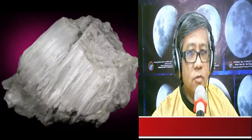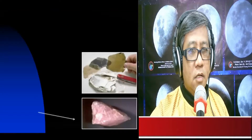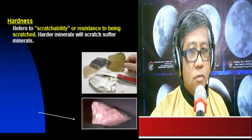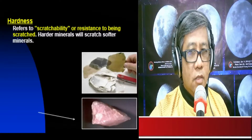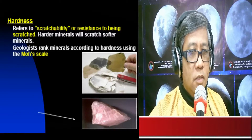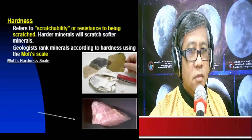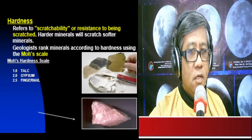Another physical property of minerals is hardness. Hardness refers to the scratchability or resistance to being scratched — harder minerals will scratch softer minerals. Geologists rank minerals according to hardness using the Mohs hardness scale. At rank 1 is talc, considered the softest of all minerals. At 2.0 is gypsum, and at 2.5 is fingernail, meaning fingernails can scratch gypsum but gypsum cannot scratch a fingernail.